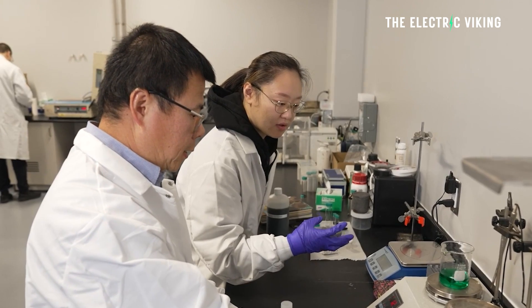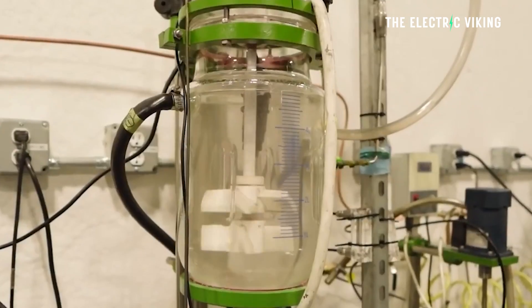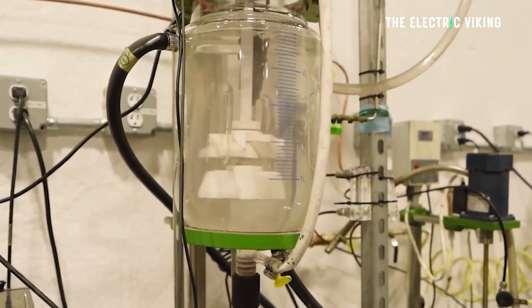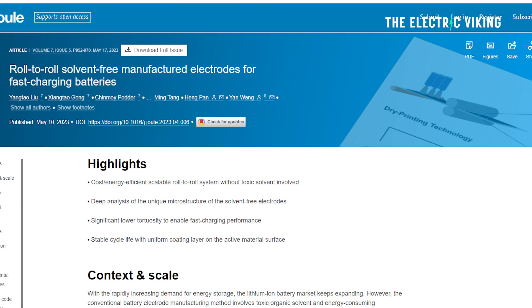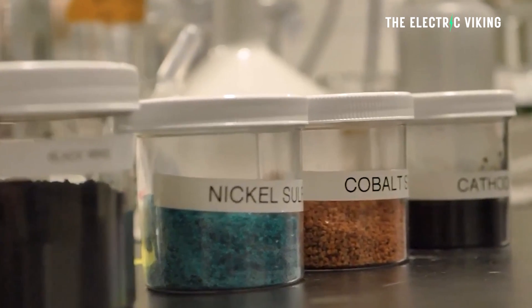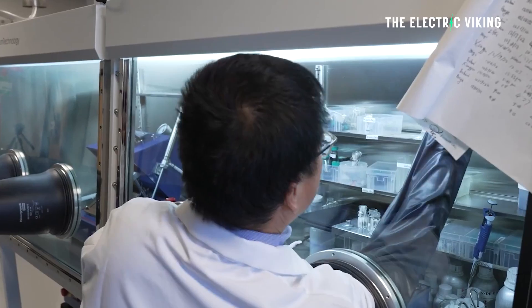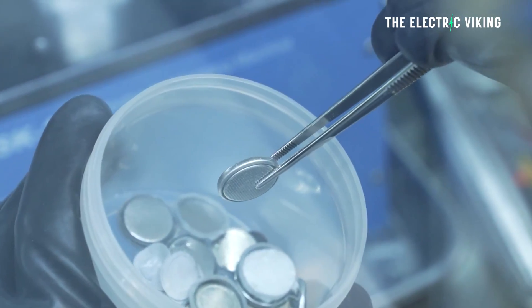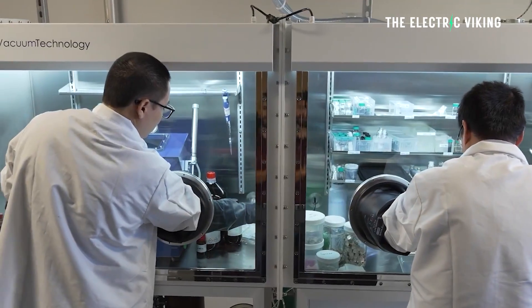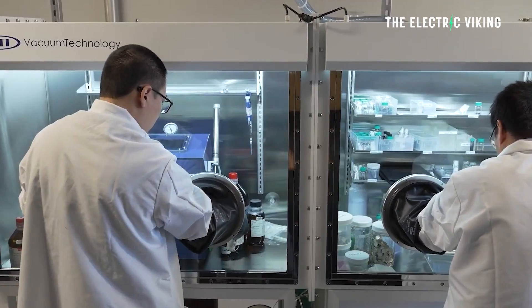However, this team are working on a dry print manufacturing technique. And they spoke about it in the journal called Joule, which circumvents the use of harmful solvents and extensive drying periods inherent in traditional electrode production methods that utilize slurries. They've been working on something similar to what Tesla have been doing as well.